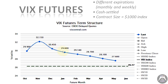This is called the term structure of volatility — the VIX futures term structure. As you can see, we start with the front month, also called the active month, which has quite a bit of liquidity, so it's a contract you can buy and sell without any problem.